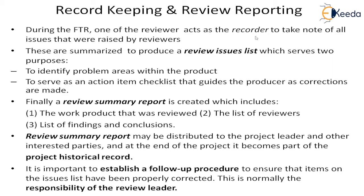One reviewer acts as recorder and keeps notes, which are summarized into a review issue list identifying problem areas within the product. This issue list serves as a checklist guiding the producer to make corrections, so nothing slips through. The recorder then creates a final review summary report containing the work product reviewed, the names of reviewers, the findings from the review issue list, and the conclusion — whether accepted, rejected, or accepted with modifications. This report is signed off by each reviewer.